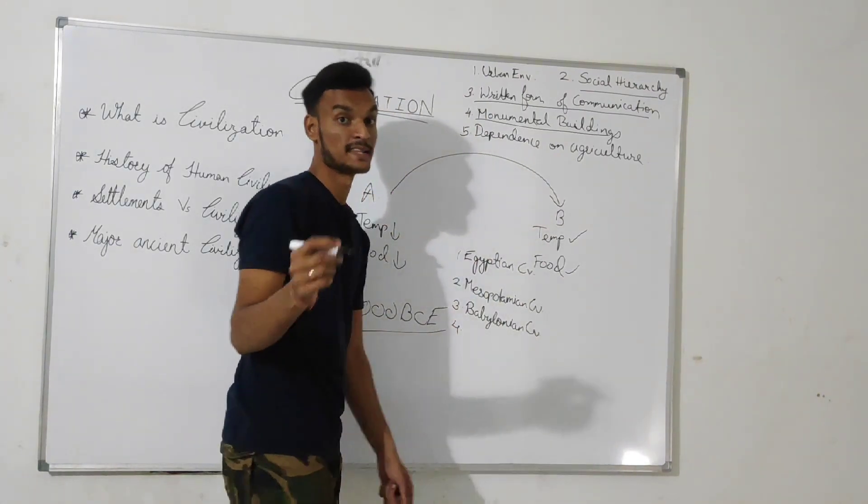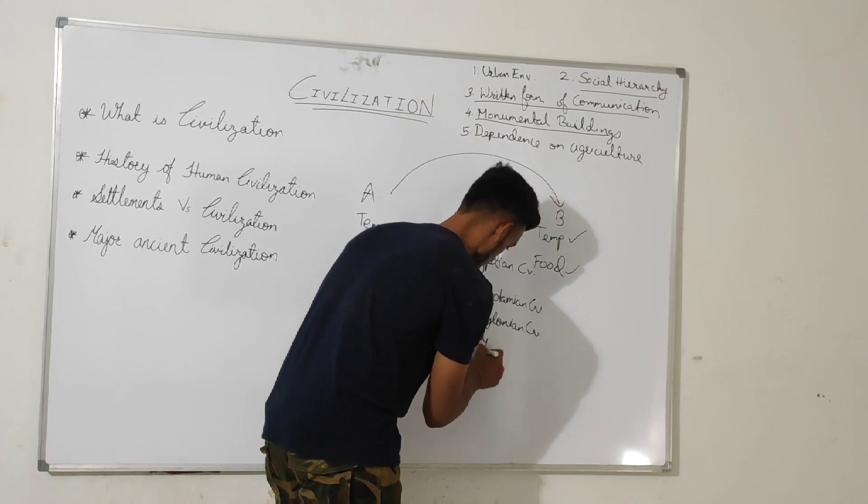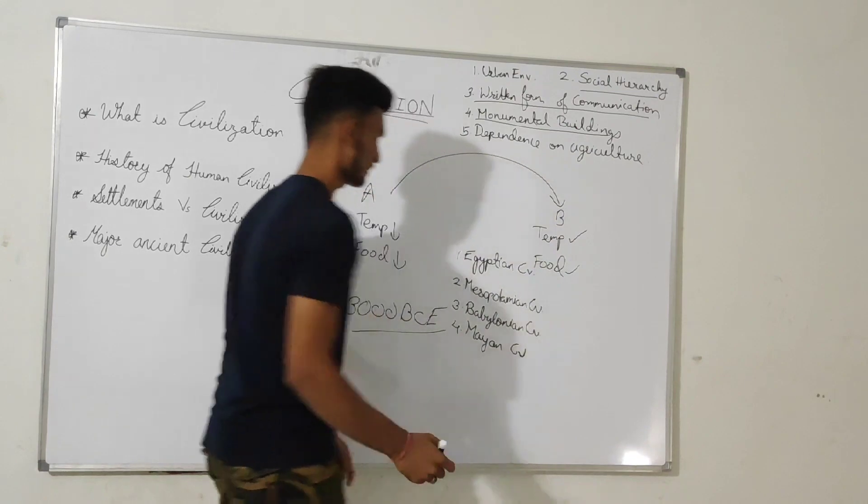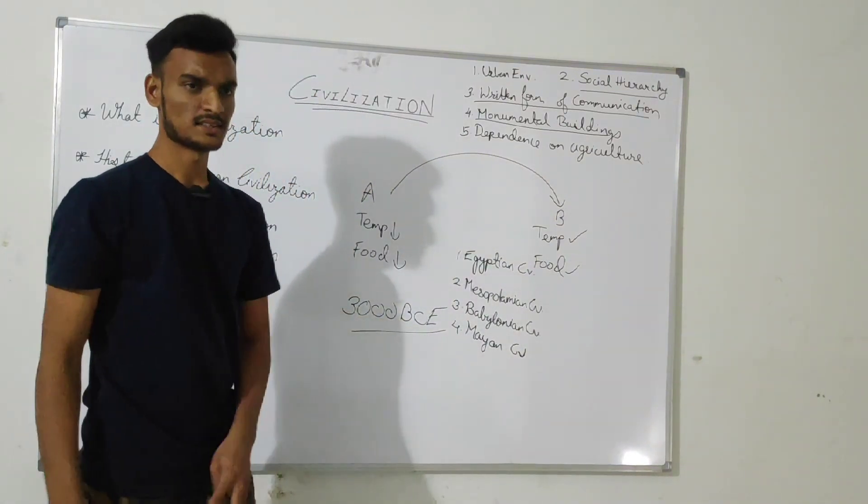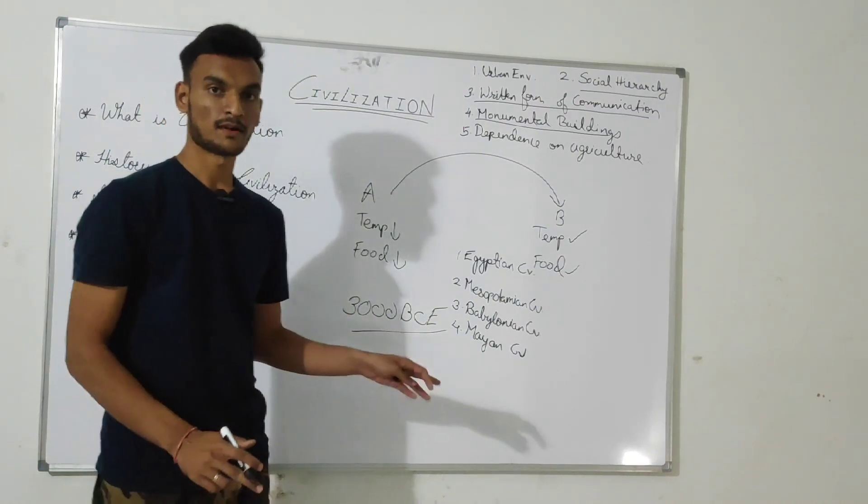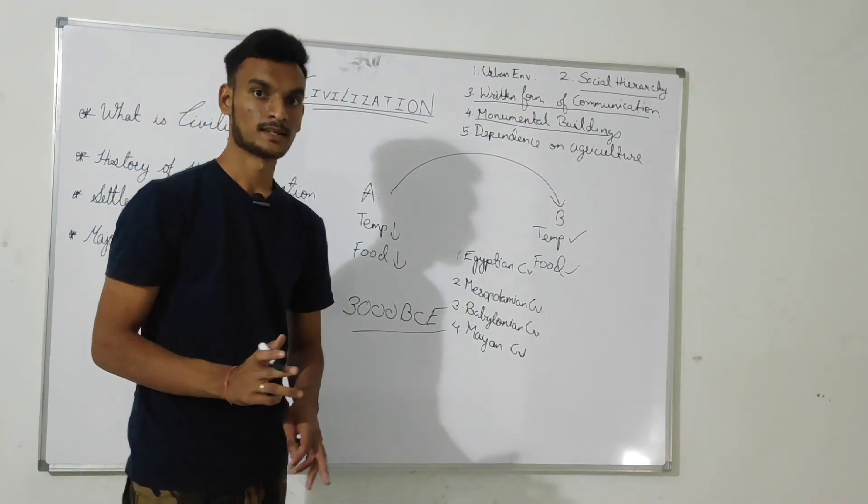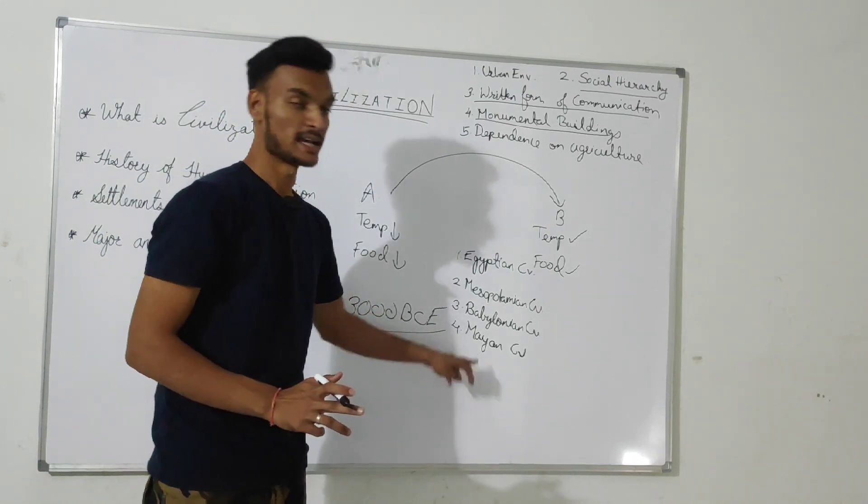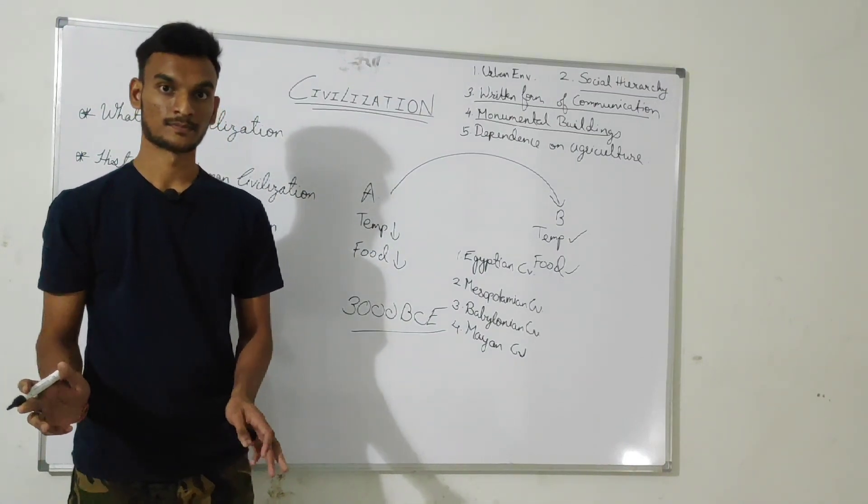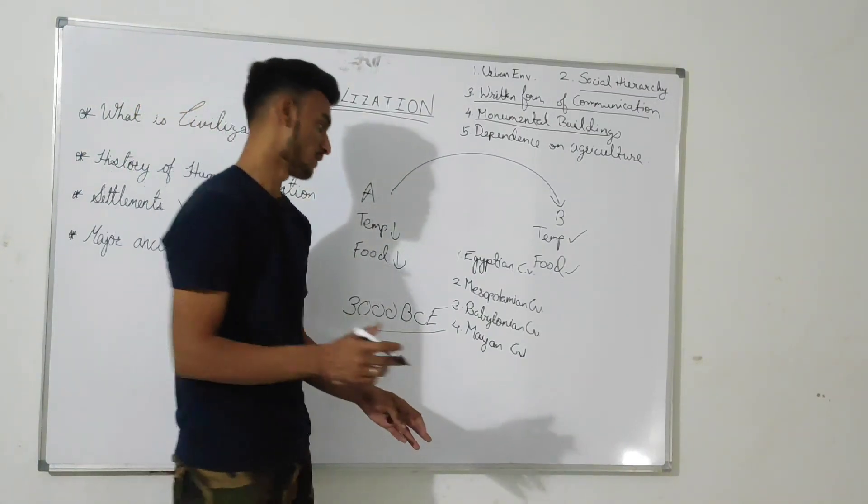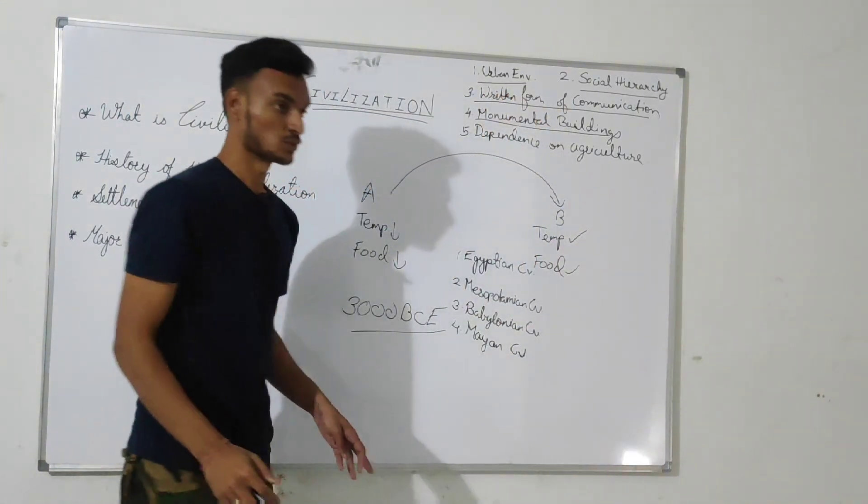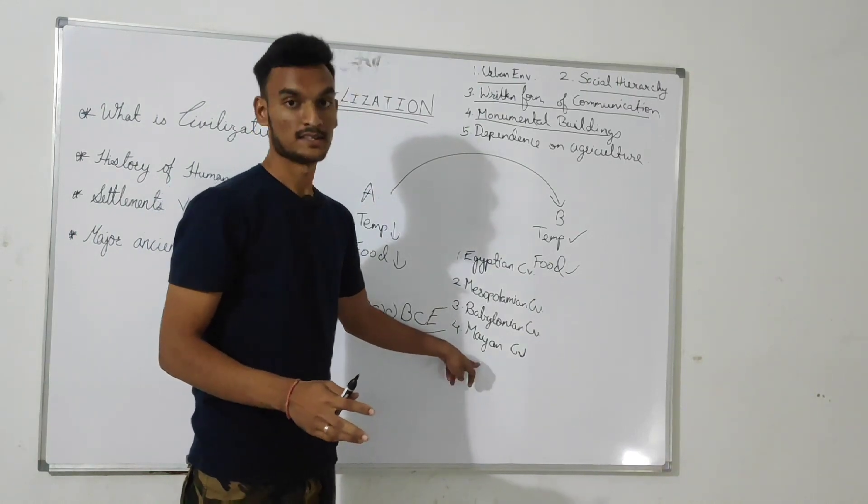Next is Mayan civilization. Mayan civilization is found in Mexico and is named after the Maya people which used to live there. The thing about Mayan civilization is it was a very widely spread civilization. So that confirms the next thing, that is a dense urban environment.